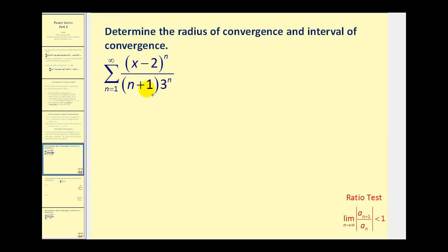So we take a look at the power series here. Notice we have x minus two to the power of n. This tells us the power series is centered at x equals two. Because our formula consists of exponentials, we'll go ahead and find the radius of convergence by applying the ratio test.